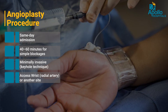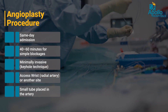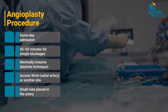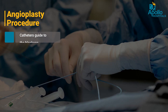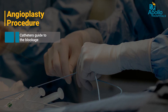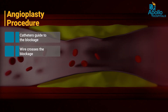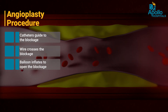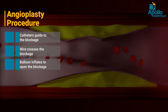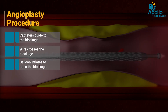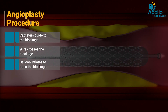A small plastic tube is kept in the radial artery on the right wrist in the cath lab. Through the tube, we introduce a catheter which goes into the blood vessel origin. Through that catheter, a wire is passed across the lesion. Then a balloon is loaded through the wire, which goes near the blockage and is inflated from outside.